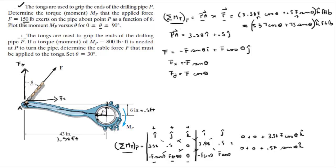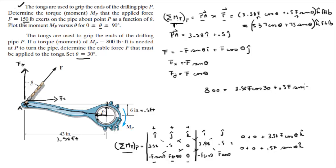For the second part, they want the force needed to create a moment of 800 foot-pounds. So set 800 = 3.58F cosine(30°) + 0.5F sine(30°), since theta is given as 30 degrees. Then solve for F.